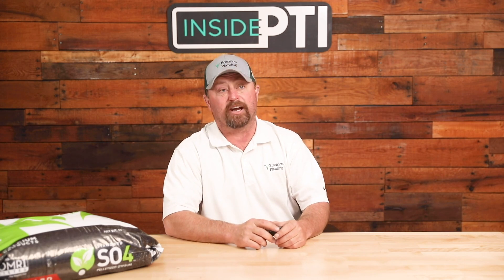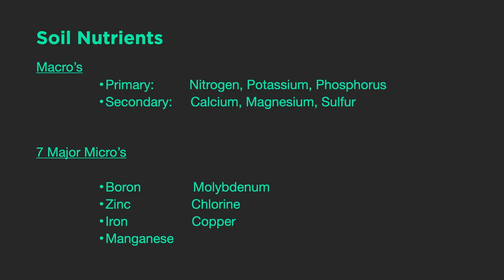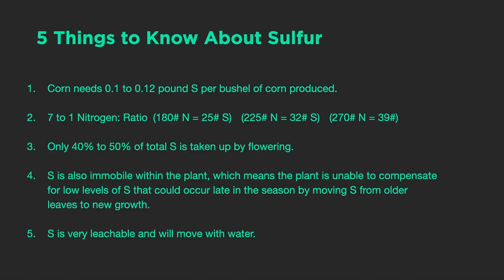Now we're starting to need to apply sulfur to our crops each and every year. Here's a list of the macro soil nutrients as well as the micros. The primary macros are nitrogen, potassium, and phosphorus; the secondaries are calcium, magnesium, and sulfur.